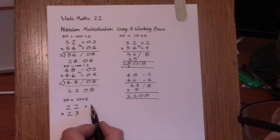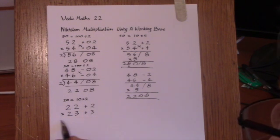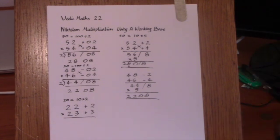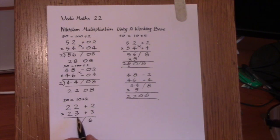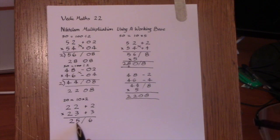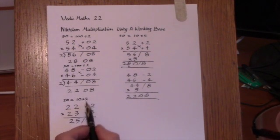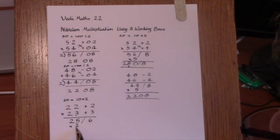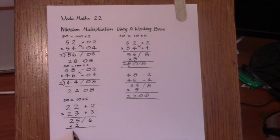Now, the surpluses are plus 2 and plus 3. And we multiply on the right to give 2 times 3 is 6. And on the left, we cross add, giving 23 add 2 is 25. And then we follow this proportionality of multiplying by 2 and get 50, that's 25 times 2 is 50, so 506.